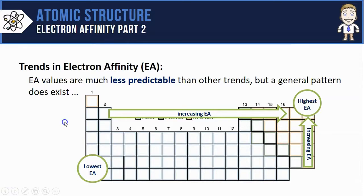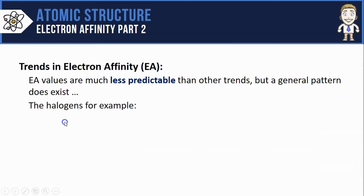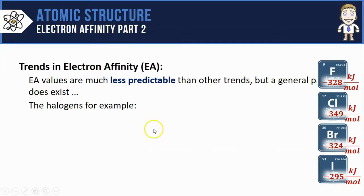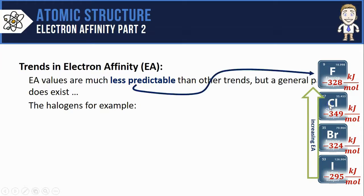We can see this pattern played out looking at one specific column from the periodic table known as the halogens. Iodine at the bottom has a lower electron affinity and that value increases as you go up, although you'll notice the pattern breaks a little bit with a slight decrease from chlorine to fluorine.